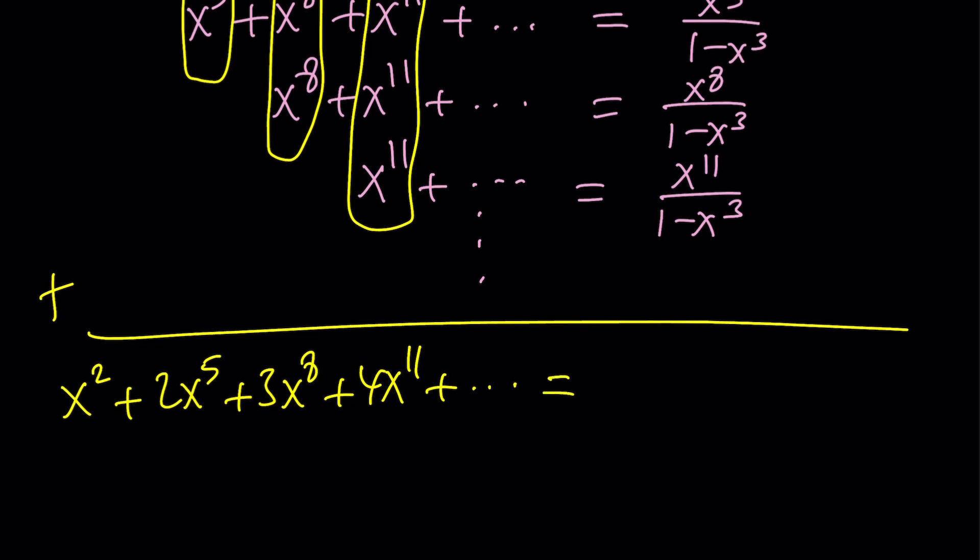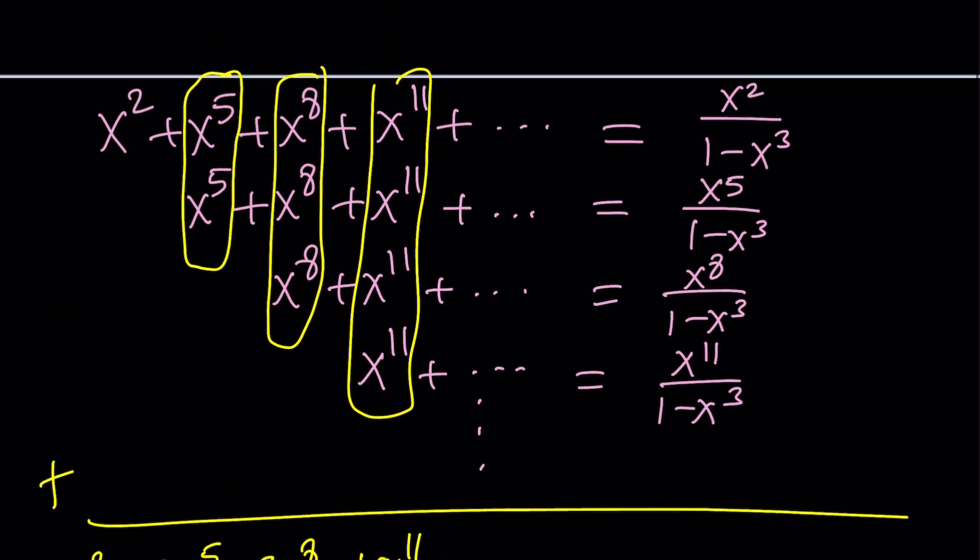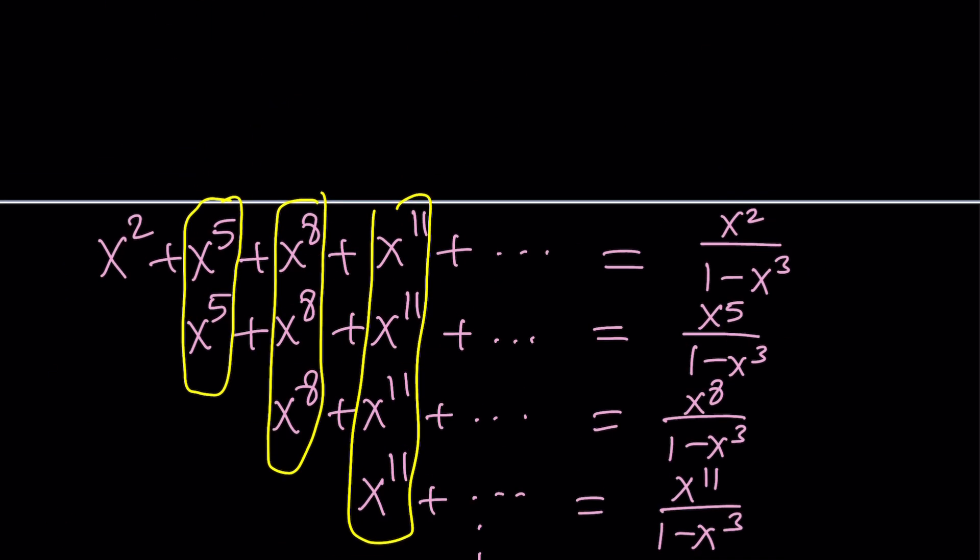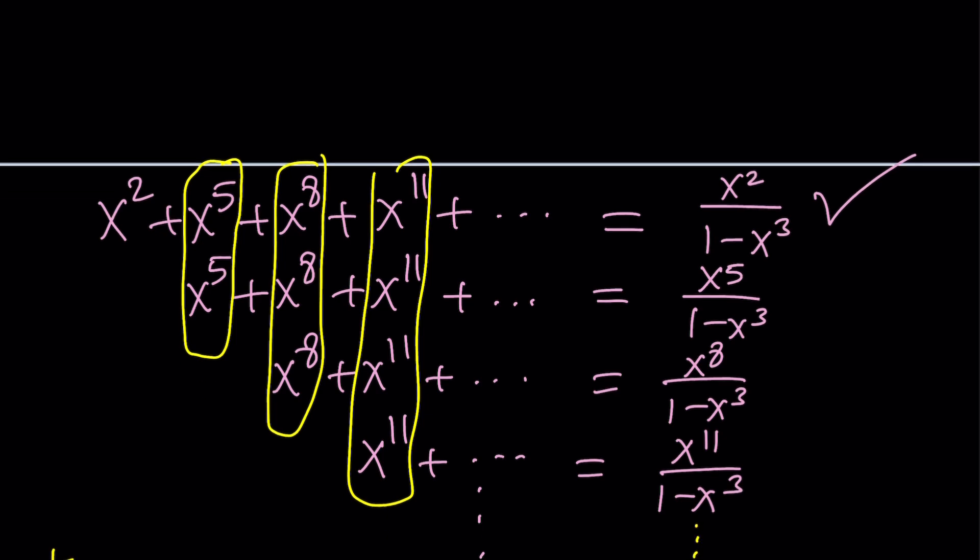So when you add these things, this is going to give you x to the 2nd plus 2x to the 5th plus 3x to the 8th plus 4x to the 11th, and this is what we want. Awesome, great. Good news on the left-hand side. What about the right-hand side? Let's check. We have fractions, infinitely many fractions, with the same denominator. So why not just add them, or add all the numerators?